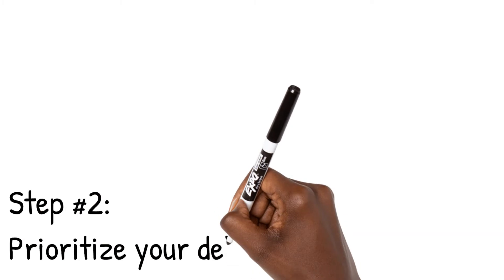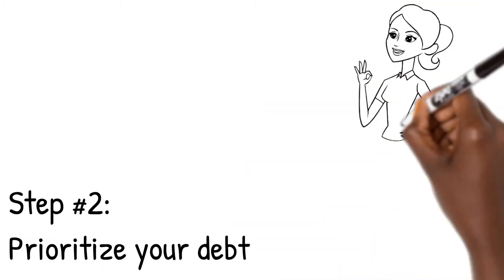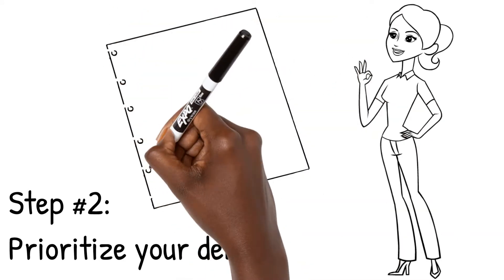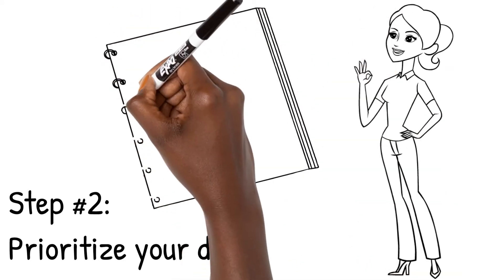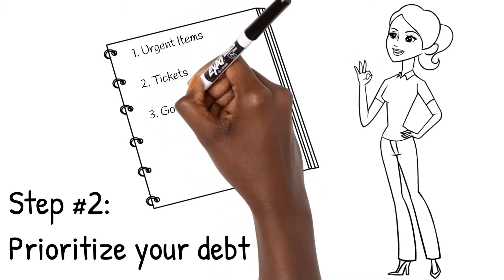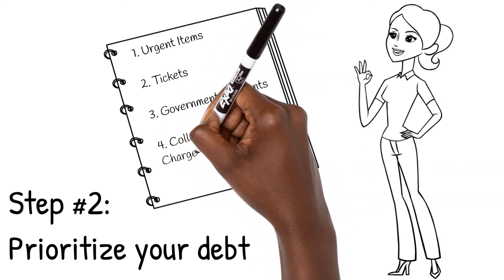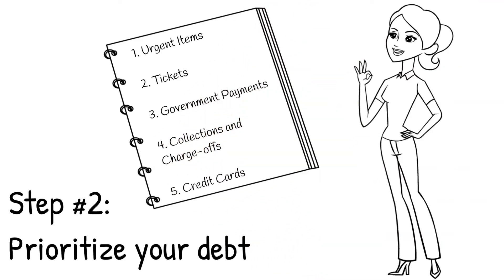Step 2. Prioritize your debt. Urgent items, like past-due rent and utilities. Tickets, in order to avoid your license from being suspended or running into issues with law enforcement. Government payments, like IRS debt, child support, and student loans, as this is a high probability of wage garnishment. Collections and charge-offs. Credit cards.